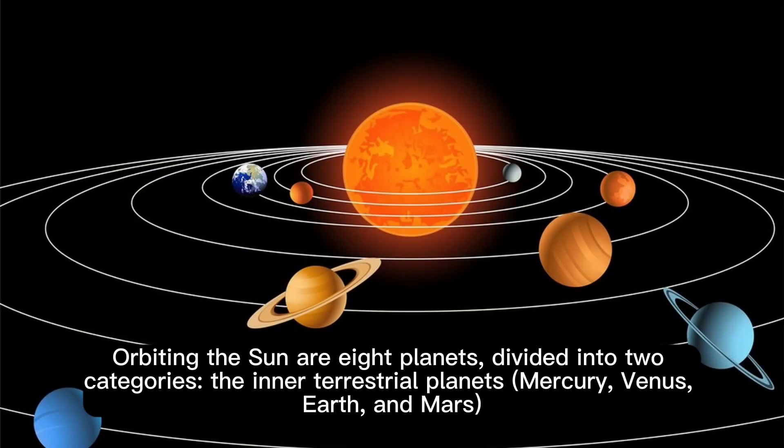Orbiting the sun are eight planets, divided into two categories: the inner terrestrial planets Mercury, Venus, Earth, and Mars, and the outer gas giants Jupiter, Saturn, Uranus, and Neptune.